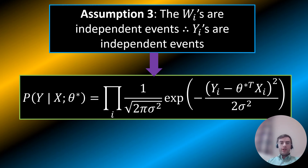The third assumption is that the wi's are independent events, meaning one doesn't influence the other. So the probability of w_a and w_b is equal to the probability of w_a times the probability of w_b, rather than the conditional form. This means we can multiply the probability of yi given xi across all i's — each data point — to get the joint probability of all y's given the x's with the true parameters theta star.